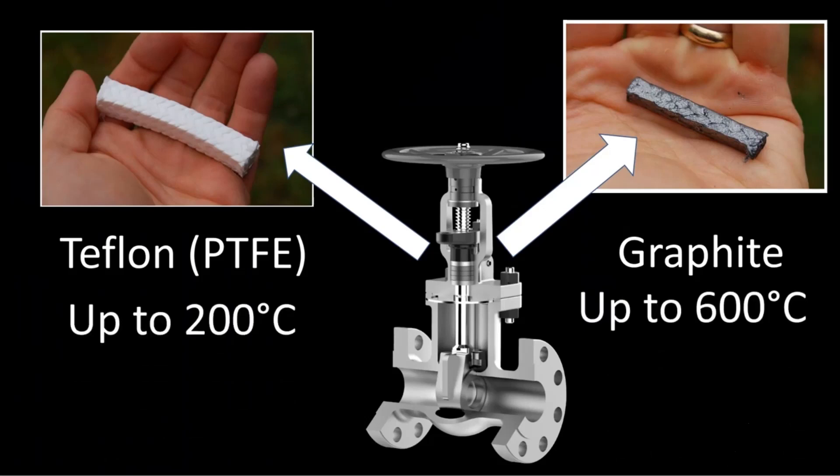So if you see the picture, PTFE is around something you could say whitish complexion and graphite is shiny blackish in color which is also sometimes referred to as flexible graphite. Now with respect to chemical compatibility, PTFE is the most compatible with almost majority of the services. But then why do we have graphite? Because of temperature limitation. So PTFE usually the thumb rule you can say suggests up to 200 degree Celsius while graphite can go up to 600 degree Celsius.